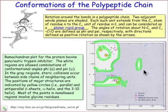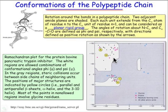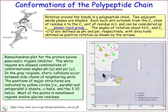This happens to be a protein for the trypsin inhibitor — bovine pancreatic trypsin inhibitor. It's a protein of about 100 amino acids.